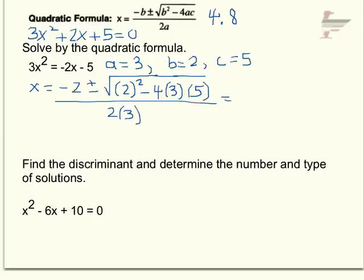So when you simplify, start in the radical, so 2 squared is 4. And 4 times 3 is 12, and 12 times 5 is 60. So that's going to be 4 minus 60.